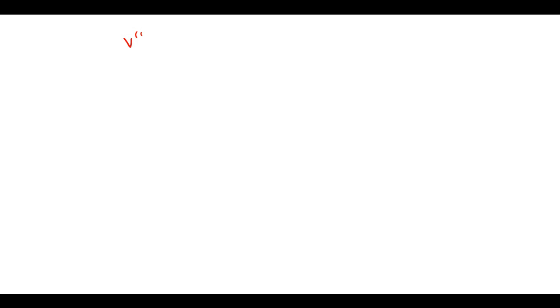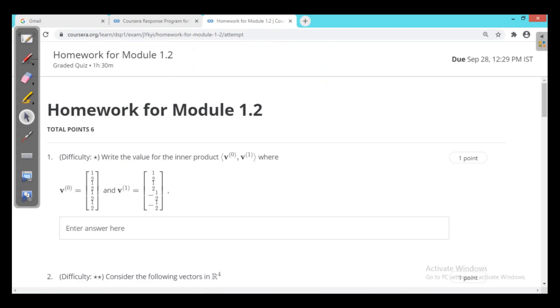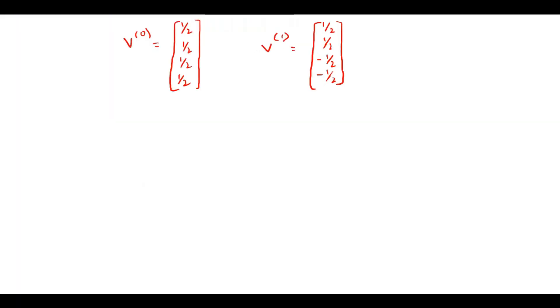Given the two vectors: V0 is (1/2, 1/2, 1/2, 1/2) and V1 is (1/2, 1/2, -1/2, -1/2). The inner product is simply the sum of products.